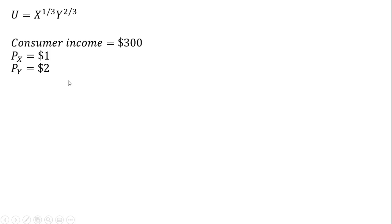We want to find the utility-maximizing consumption bundle — which combination of X and Y will give this consumer the largest utility possible, subject to the constraint of only having $300 to spend at these prices for good X and good Y.